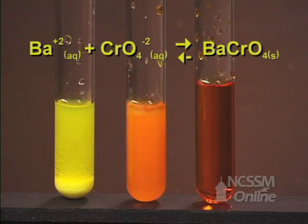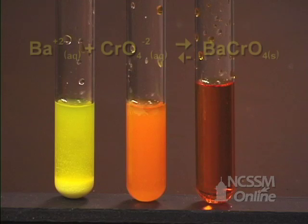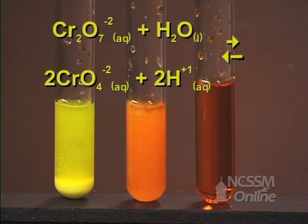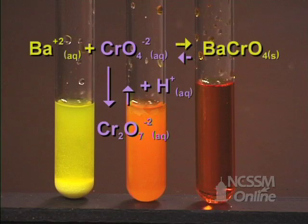In the first tube, there is a high concentration of chromate ion, so we get a large amount of precipitate. In the second tube, we only get a small amount of precipitate. This indicates that the equilibrium lies very far towards the dichromate side and only a small amount towards the chromate side. When we add acid to the third tube, it shifts the equilibrium in the reverse direction and decreases the chromate ion concentration to the point where no barium chromate forms.